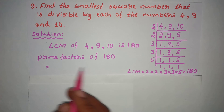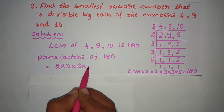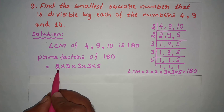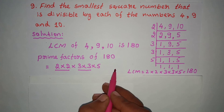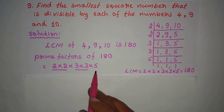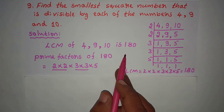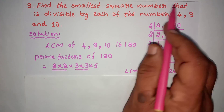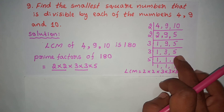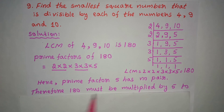The prime factors of 180 are 2 into 2 into 3 into 3 into 5. Grouping same numbers: 2 and 2 form a group, 3 and 3 form a group, but 5 is single with no pair. Since 5 has no pair, 5 is single.